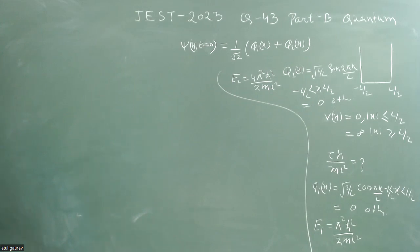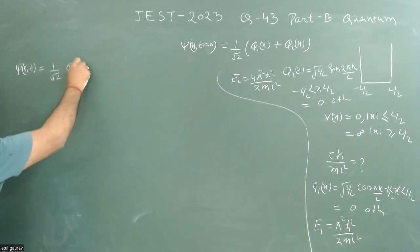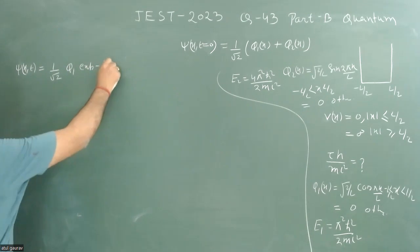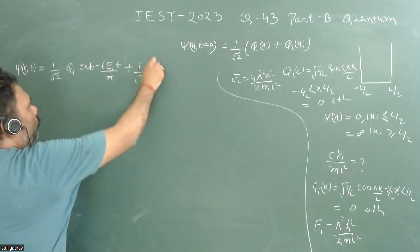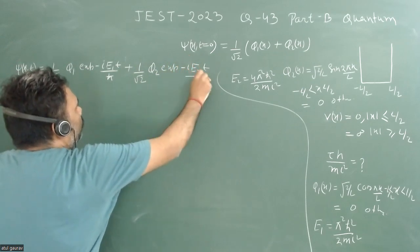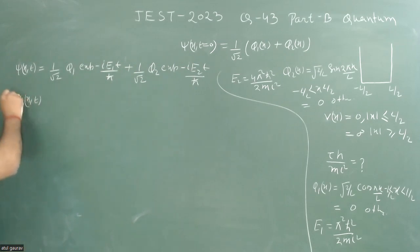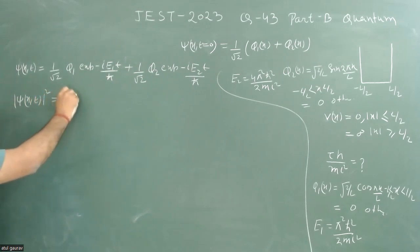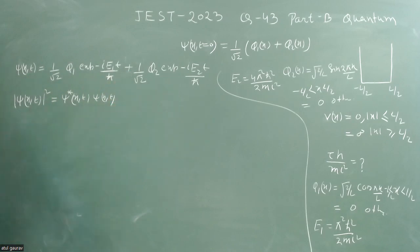So let's start. We write ψ(x,t) = (1/√2) φ1 · e^(−iE1t/ℏ) + (1/√2) φ2 · e^(−iE2t/ℏ). This is the time evolution of the state. Now we need to compute |ψ(x,t)|², which means we take ψ*(x,t) times ψ(x,t).